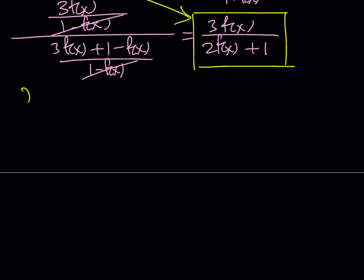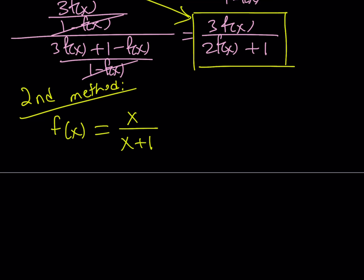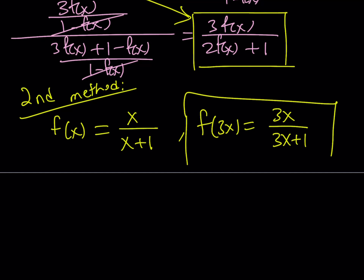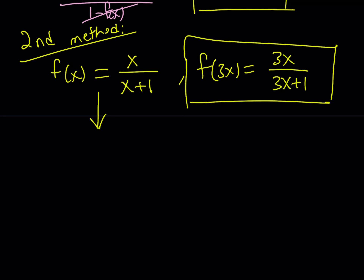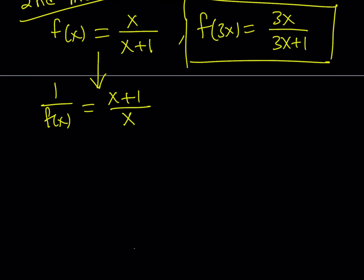Let's talk about the second method. The second method is somewhat different — otherwise it wouldn't be called the second method. Let's rewrite f of x as x over x plus 1, and f of 3x as 3x over 3x plus 1. I would like to work with f of 3x, but how do I manipulate it to make it contain f of x as a variable? Here's what I'm going to do — something different from the first method. I'm going to flip, or invert, f of x. Why? Because it gives us something nicer and separable. So 1 over f of x equals x plus 1 over x, which we can separate as 1 plus 1 over x.